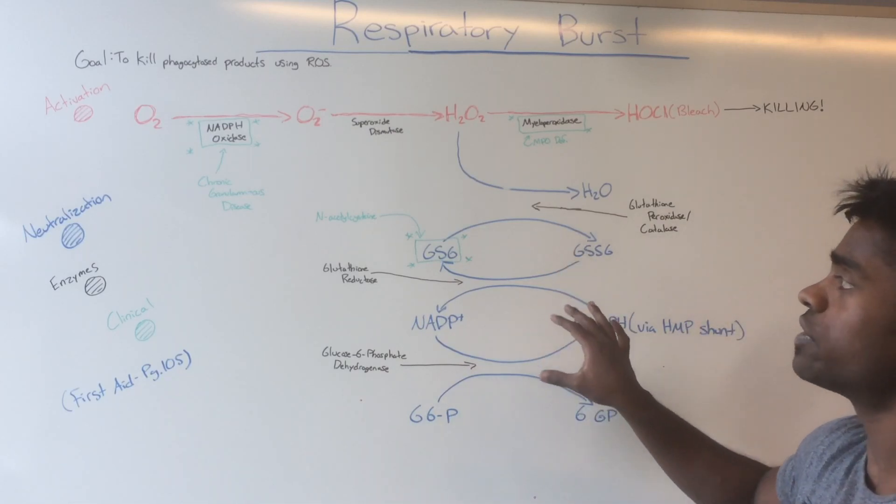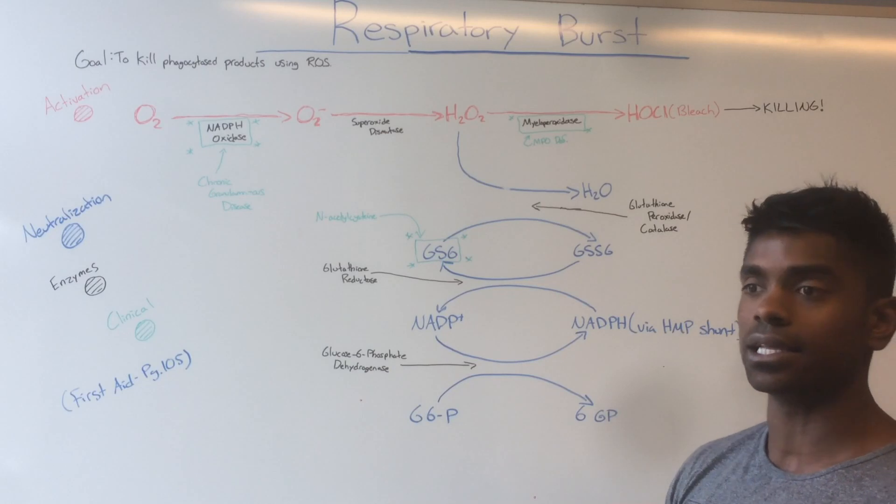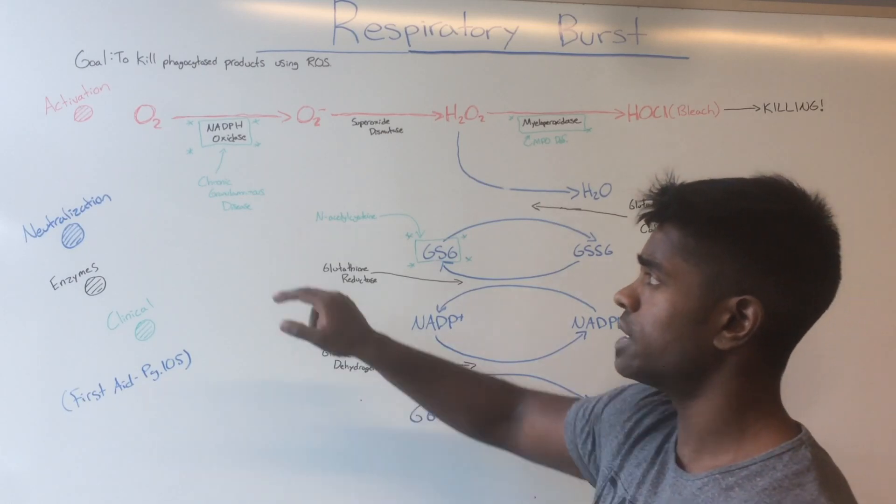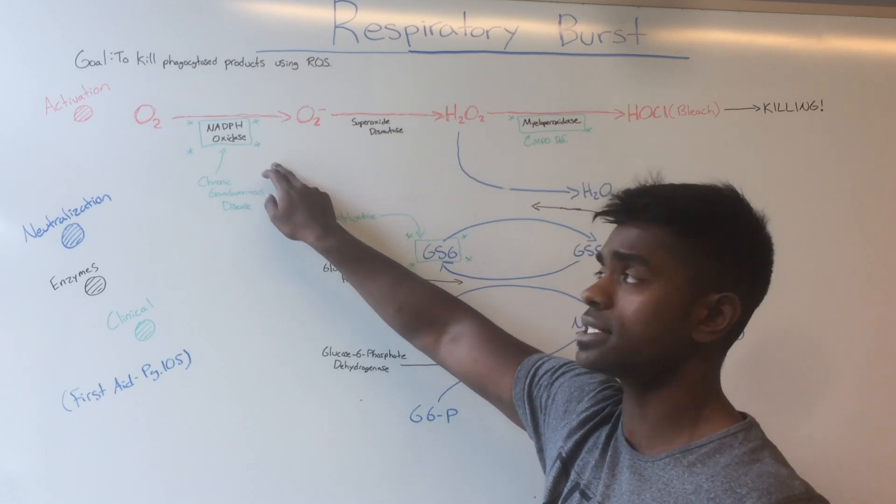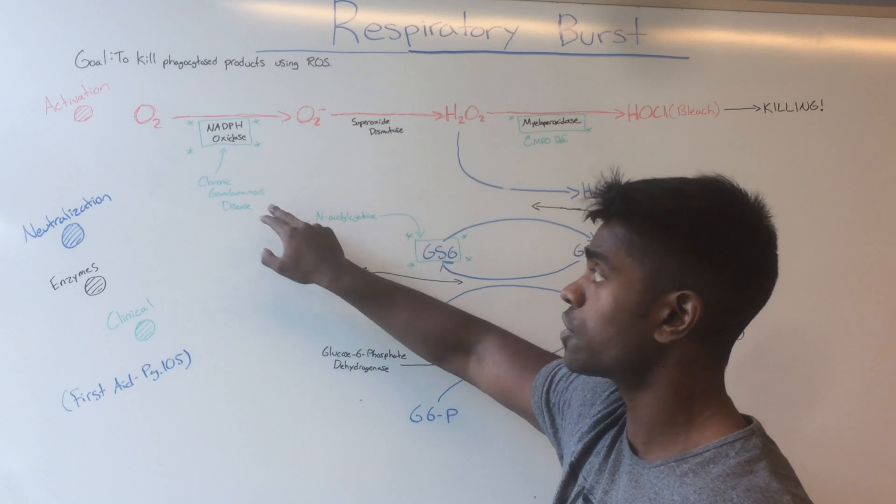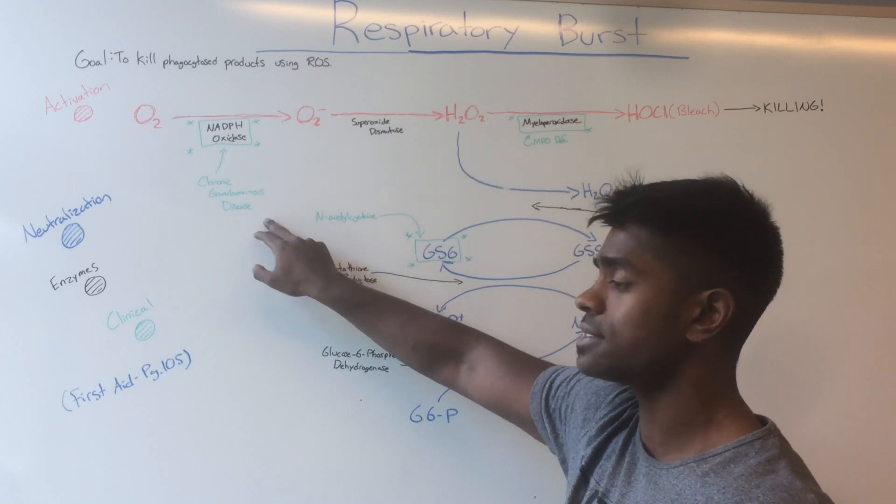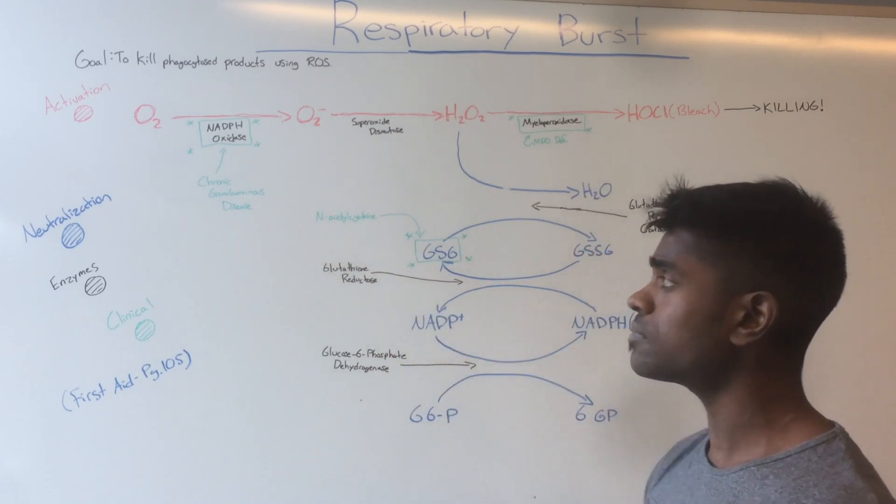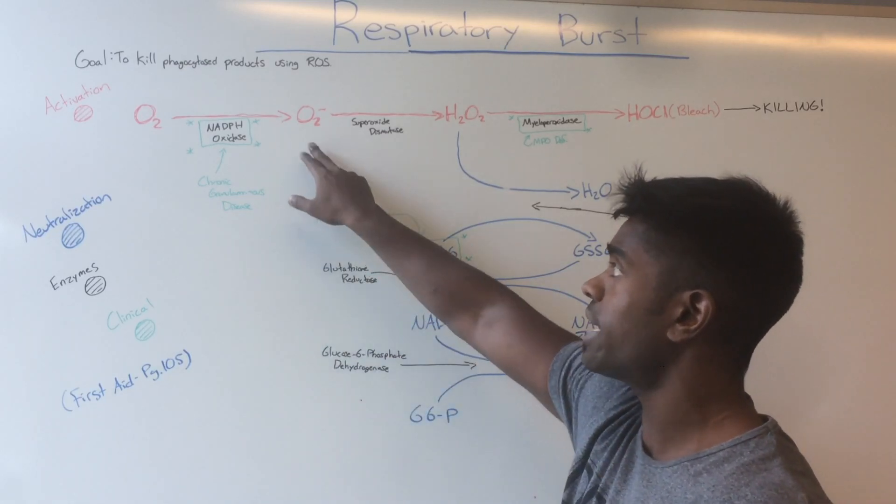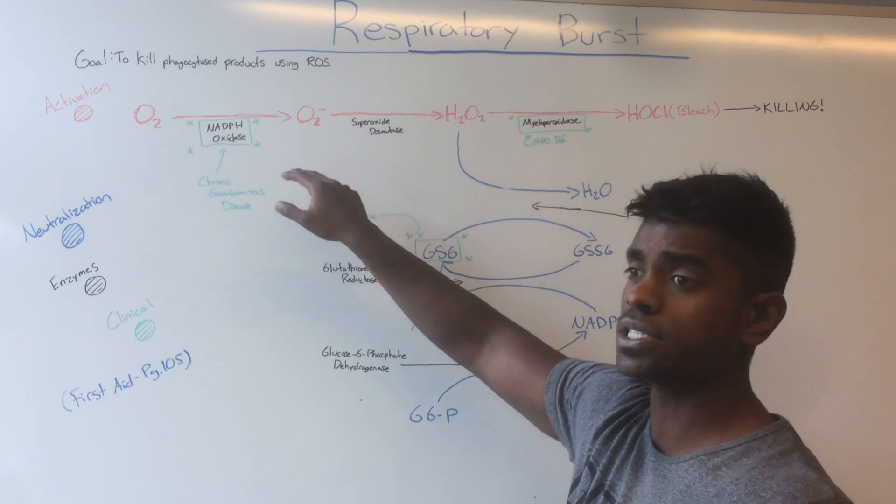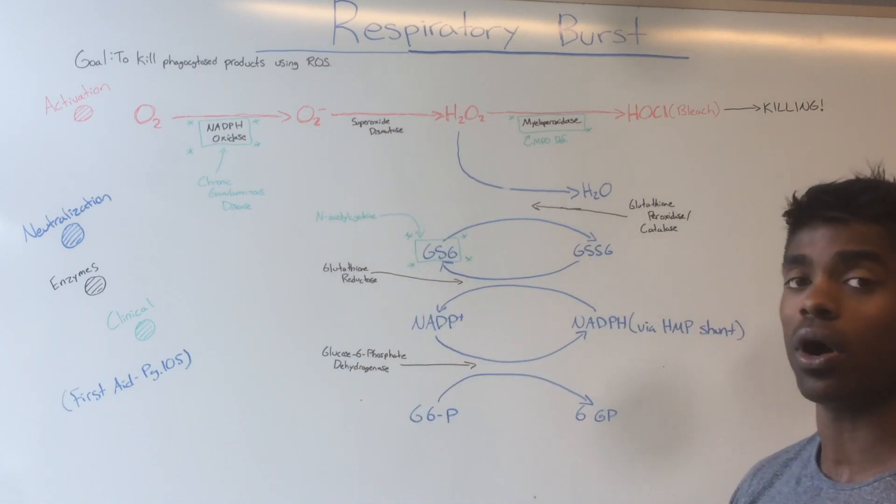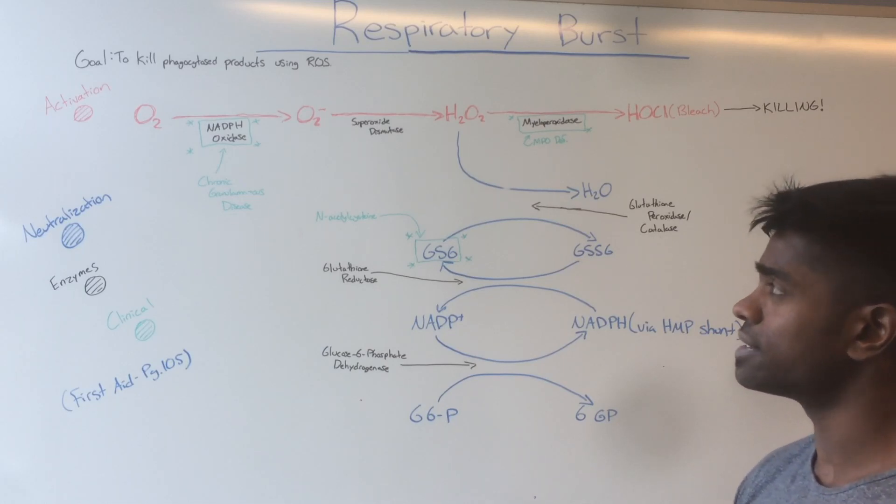We're going to look at how this correlates clinically and how it shows up on board exams. The first enzyme to discuss is NADPH oxidase. Deficiency in this enzyme results in chronic granulomatous disease, or CGD. This causes a problem because we cannot create superoxide, which is important to kill unwanted products within the cell.